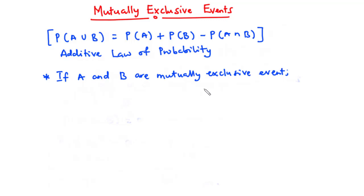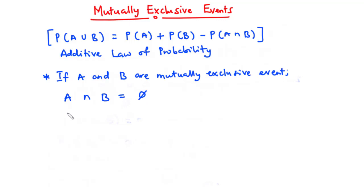If A and B are mutually exclusive events, then A and B do not have anything in common. In any single trial, event A and event B cannot occur simultaneously. In that case, A∩B is an empty set, and the probability of A∩B is equal to zero.